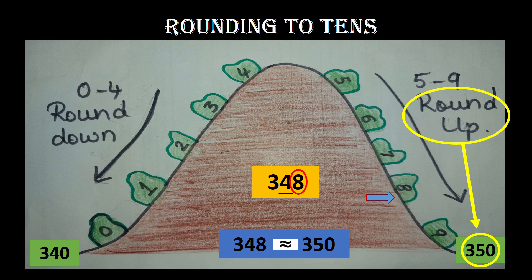Here I have a three-digit number, 348. I am rounding it off to tens. The digit 8 is on the right side, so we round up the number. 348 is rounded up to 350. Hence we say 348 is approximately equal to 350.